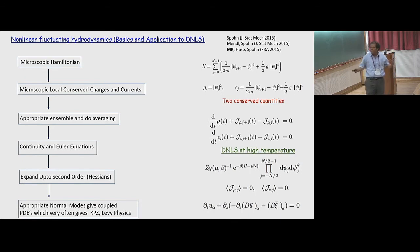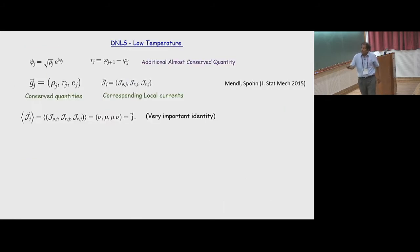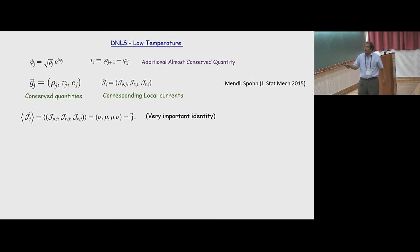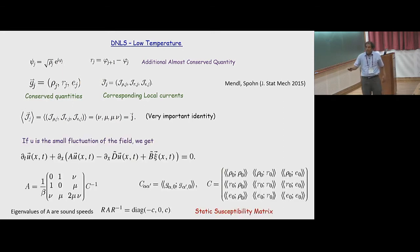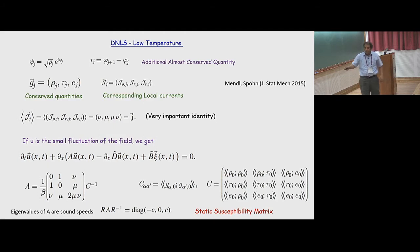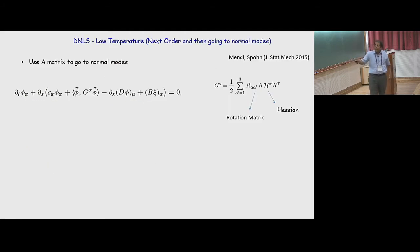At high temperature you basically get diffusive behavior. When you go to low temperatures, there is this additional conserved quantity, and then it falls into the nonlinear fluctuating hydrodynamics framework where you have three conserved quantities. You can use that machinery to write down linear fluctuating hydrodynamic theory — these are the sound speeds — and then go to the next order, to normal modes, and write the full nonlinear fluctuating hydrodynamic theory.